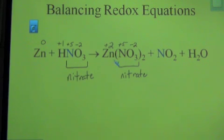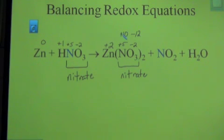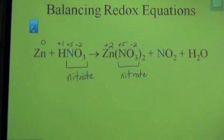You might say that doesn't look like it adds up to zero, so let's do the quick math. 2 times 3 is 6 oxygens; times −2 gives −12. We've got two nitrogens each at +5, so that's +10, plus the +2 for the zinc — sure enough, it all adds up to zero. So the oxidation numbers are +2 for zinc, +5 for nitrogen, and −2 for oxygen.